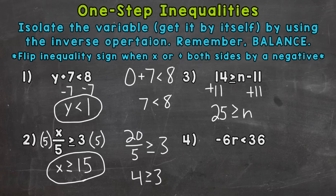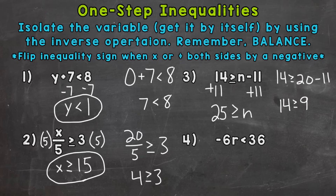Twenty is less than 25, so let's plug 20 in for n. We have 14 is greater than or equal to 20 minus 11, which is 9. That is true, so 20 would be a solution along with anything equal to or less than 25. This is our final answer for number three.